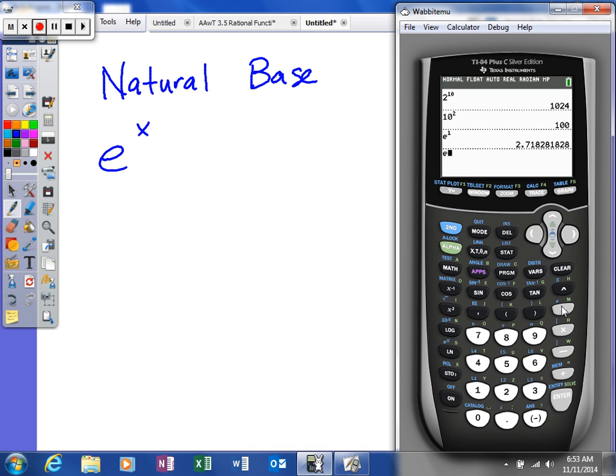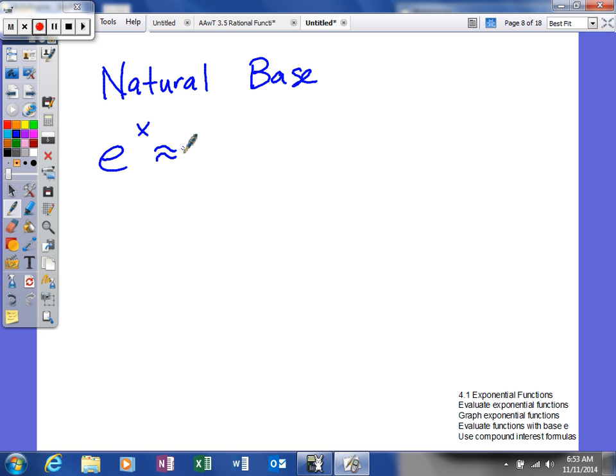If we just type in one then it tells you what that is, or if you hit second divide it will give you e without an exponent. But you can see it's, I'll see if I can memorize a couple of them: 2.718281828.